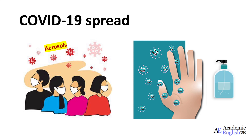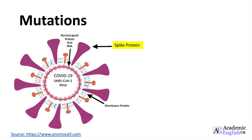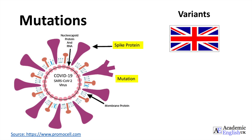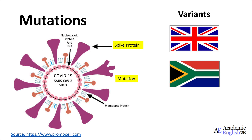My next point is mutations. Like other viruses, COVID-19 cannot survive without a living cell in which to reproduce. Once it enters human cells, COVID-19 replicates copies of itself which go on to infect other cells. Sometimes a mistake is made when the virus is replicating — this is called a mutation. Mutations have led to new COVID-19 variants. One example, called B.1.1.7, was first detected in the United Kingdom. Another, called B.1.3.5.1, originated in South Africa. Interestingly, both variants share a key mutation called N.5.0.1.Y on the spike protein that allows the virus to bind more tightly to human cells. This mutation is much more contagious than previous COVID variants; fortunately, they do not appear to be deadlier.